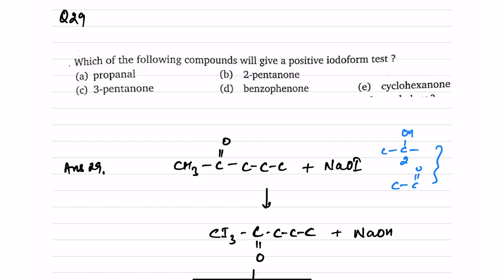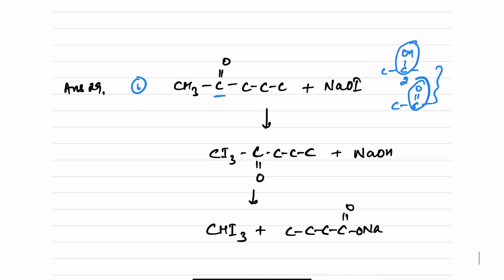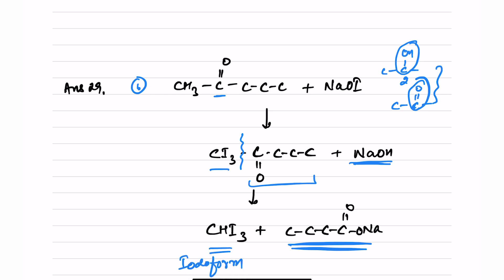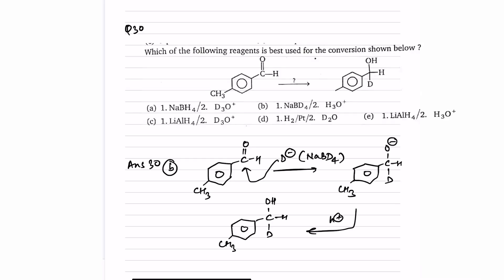Question number 29: which compound gives a positive iodoform test? Compounds with OH or C=O on the second carbon position can give a positive iodoform test. Option B is pentan-2-one with C=O on the second position. Reacting with NaOI forms CI3CO first; NaOH then oxidizes and cleaves this part, forming the sodium salt of the carboxylic acid and CHI3 (iodoform). The answer is option B.